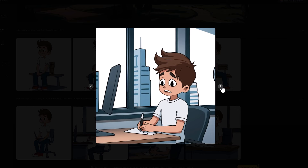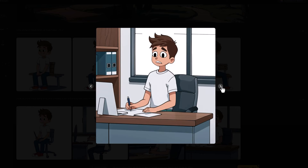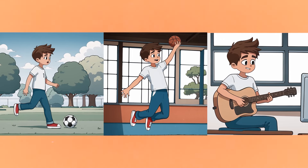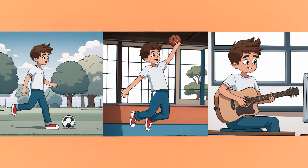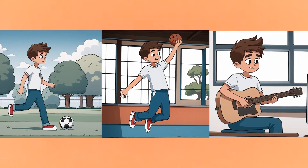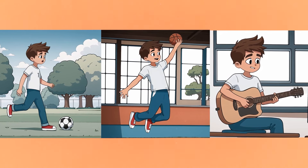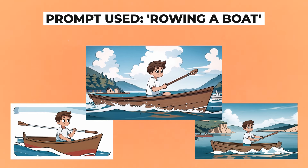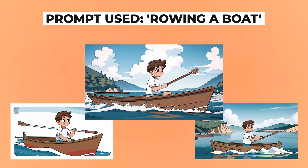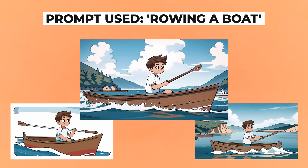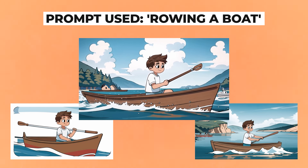Here he is inside an office, and all of them still look like the character. Here are a few different images I've created — I got my character to play soccer, play a game of basketball, and he's learning to play the guitar. And for this prompt, all I wrote in was 'rowing a boat.' So that just shows you don't always have to write a detailed prompt to get some good results.